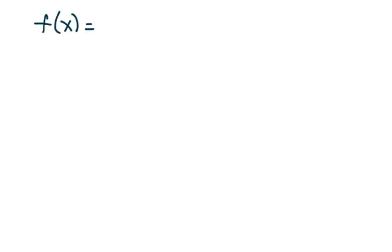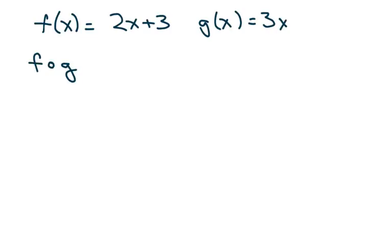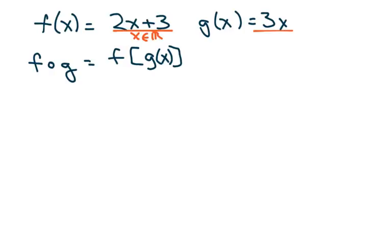The first one is problem 29. f of x equals 2x plus 3, and g of x equals 3x. So the first thing we're going to do is compose f and g together, so this means f composed of g of x. Since these aren't rationals, the domain of f is all real numbers and the domain of g is all real numbers. So this is going to be easy — the composite will also be all real numbers.